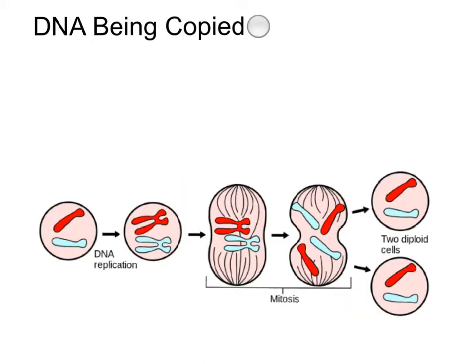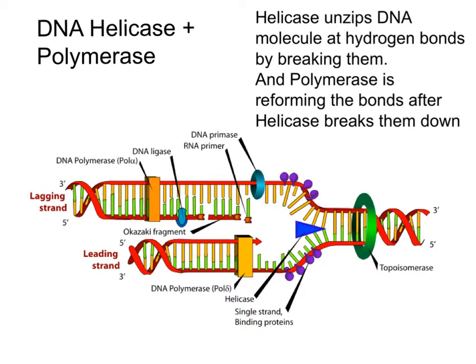When the copies are complete, before one DNA molecule forms into two, they make a larger shape after they break apart and start over again. Helicase unzips the DNA molecule at hydrogen bonds by breaking them, and polymerase is reforming the bonds after helicase breaks them down.